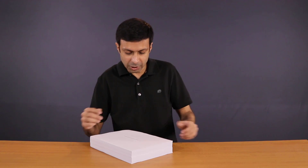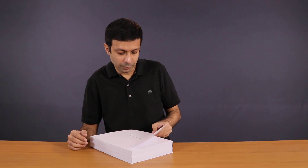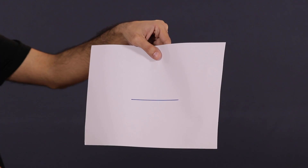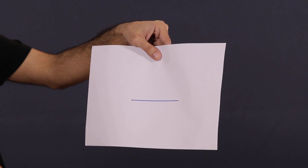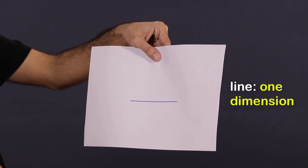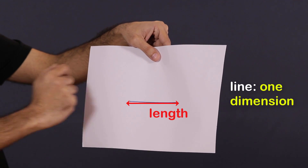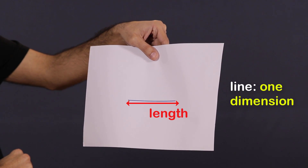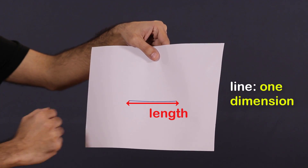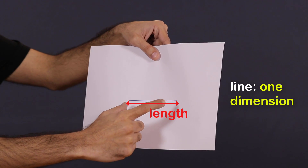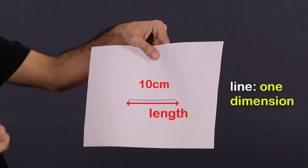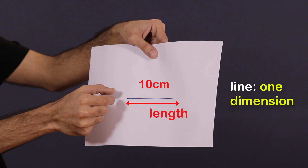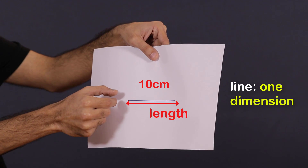On the next paper I've drawn a line. A line has one dimension: its length. We can measure the length of the line here — it's going to be 10 centimeters. But we don't care about the thickness of the line.